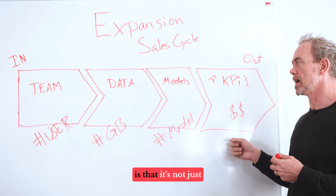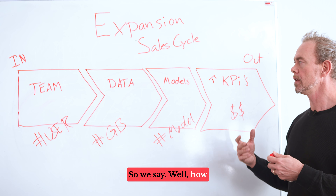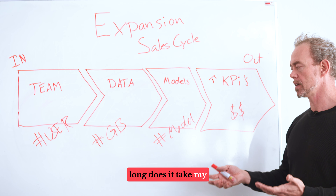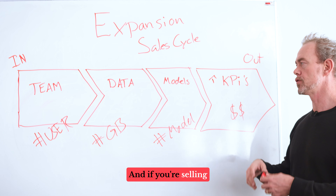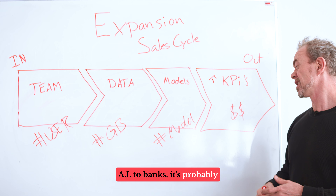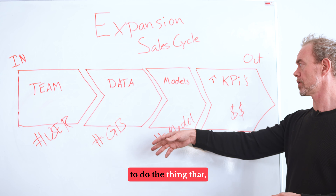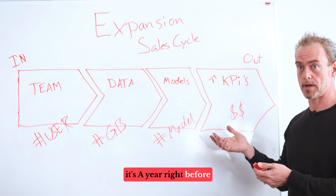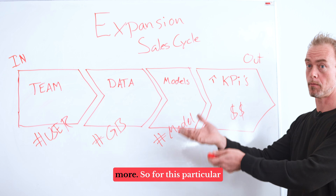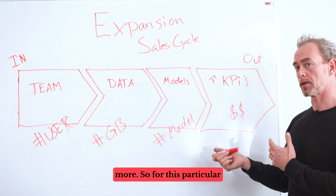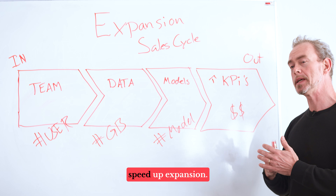It's not just an input and output — you can also create a timeline. How long does it take a typical customer to run through this value chain? If you're selling AI to banks, it's probably two years. They set a team, they do the thing, and if you're lucky it's a year before the bank realizes this works really great and they want to buy more. So for this particular customer, we said we actually want to increase adoption and speed up expansion.